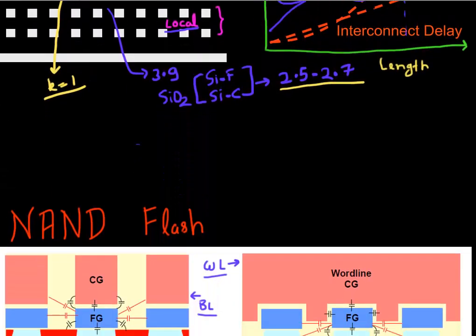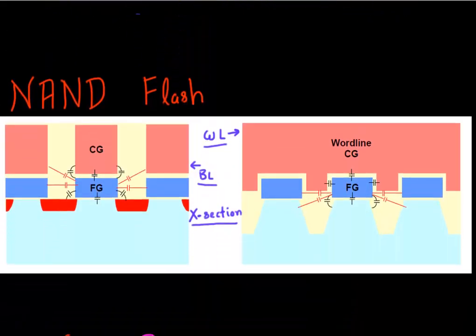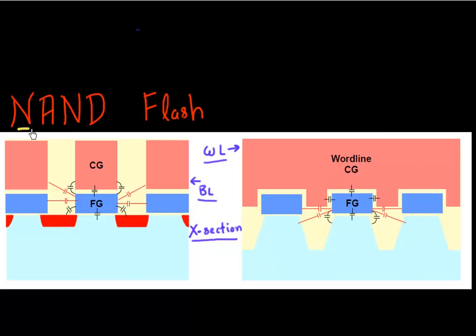We also looked at NAND flash memory. So NAND flash memory has one of the prime limitations of scaling. Things over there is these fringe capacitance, or the capacitance that you get between two floating gates. So I'm showing here two different cross sections, one along the word line and another one along the bit line.